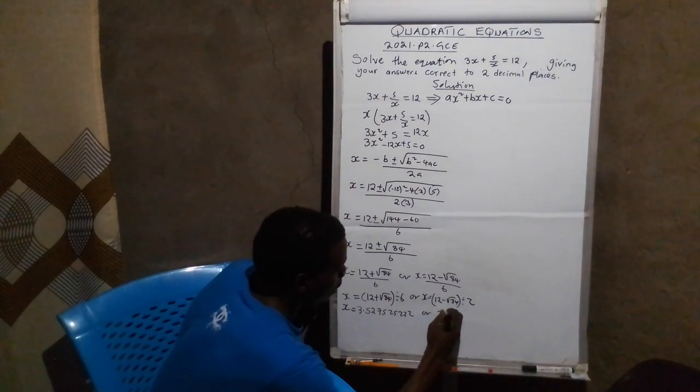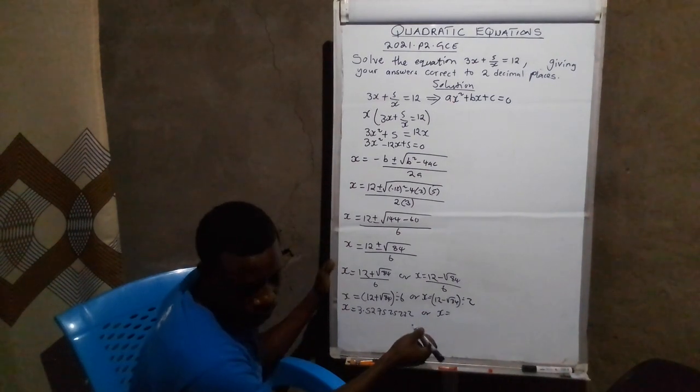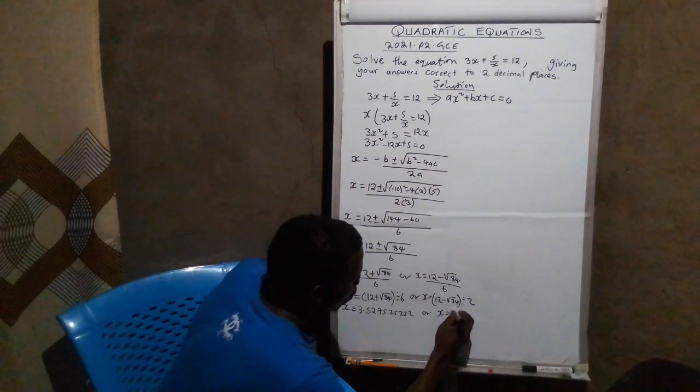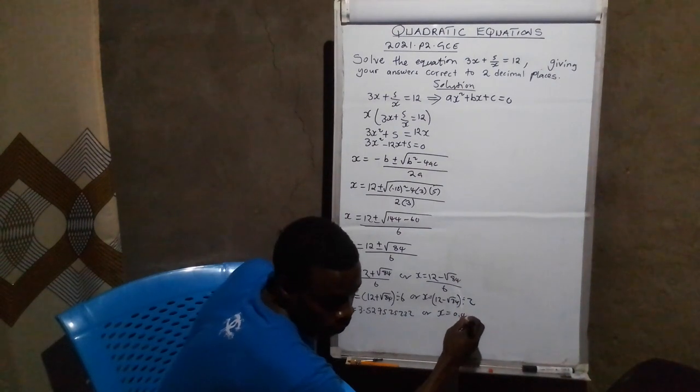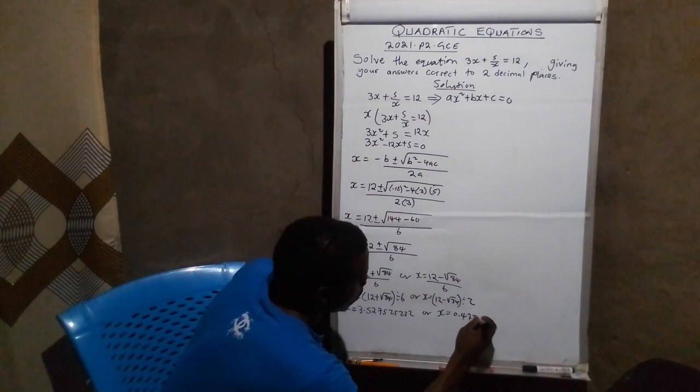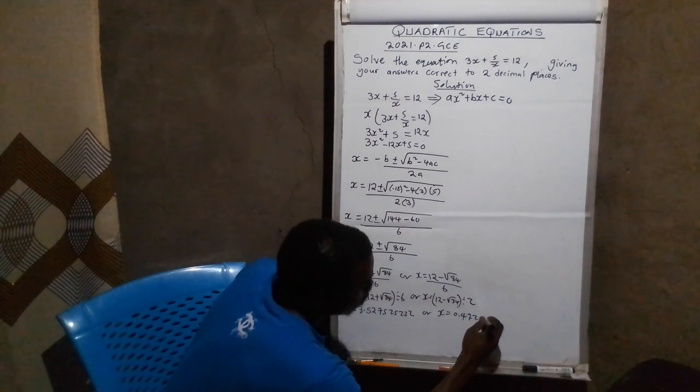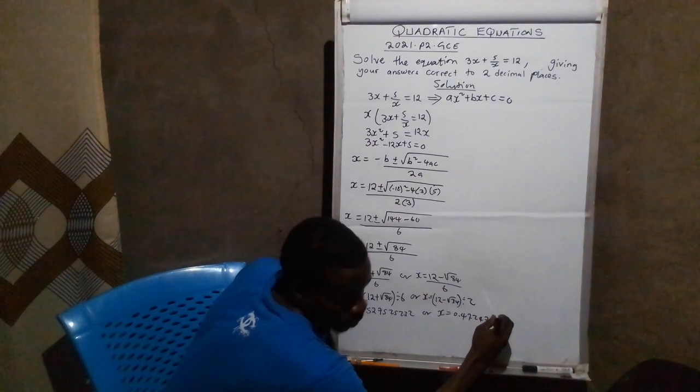Or this side, x is equals to, we will do the same on the calculator, it will be 0.47247463638.